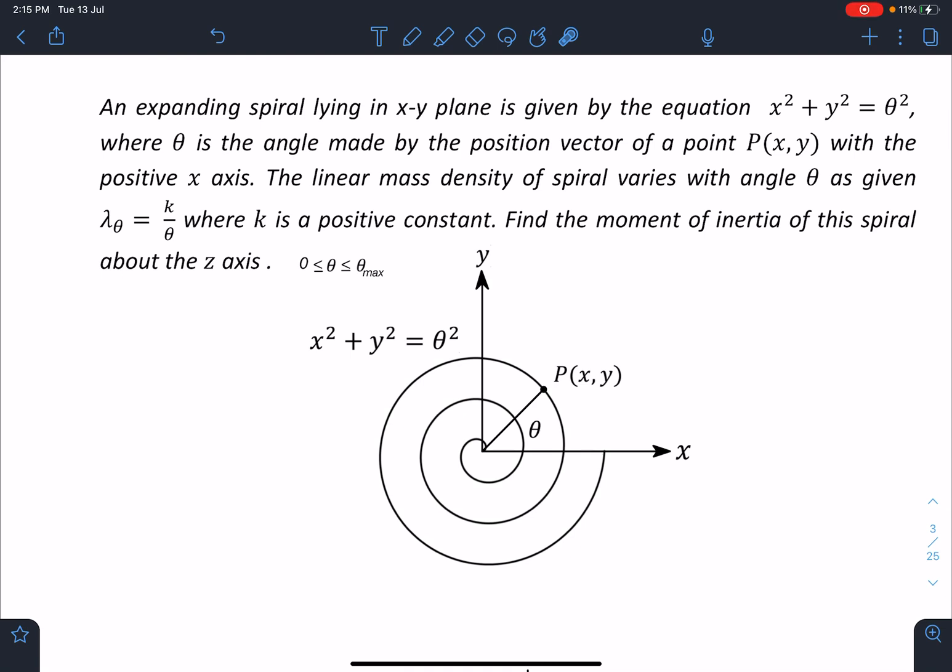An expanding spiral lying in x-y plane is given by the equation x² + y² = θ², where θ is the angle made by the position vector of a point P with the positive x-axis. You can see here this is the position vector and this angle θ is given here. The linear mass density of spiral varies with angle θ as given: λ_θ is given as k/θ, where k is a positive constant. That means as θ is increasing, the value of linear mass density is decreasing. Find the moment of inertia of this spiral about the z-axis. This θ is going from 0 to θ_max.